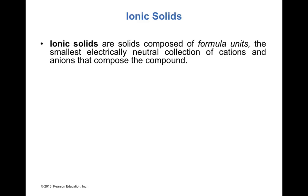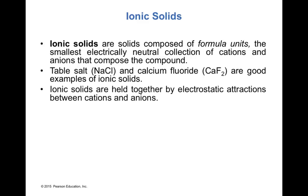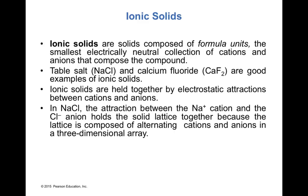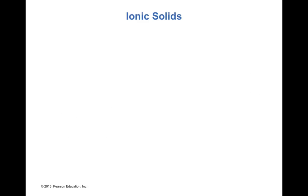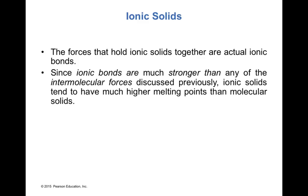Ionic solids are composed of formula units — the smallest electrically neutral collection of cations and anions that make up the compound. Table salt (NaCl) and calcium fluoride (CaF₂) are examples. Ionic solids are held together by electrostatic attractions between cations and anions; in NaCl, the Na⁺ and Cl⁻ ions form a three-dimensional alternating lattice. Because ionic bonds are much stronger than any intermolecular force, ionic solids have much higher melting points than molecular solids.